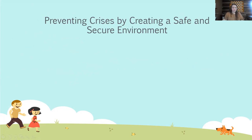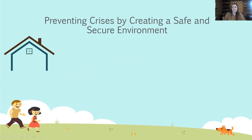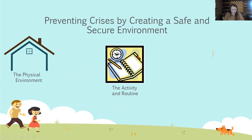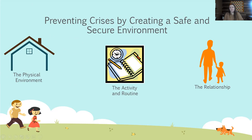Now we're going to talk about preventing crisis by creating a safe and secure environment. These are all factors known as setting conditions, which are anything that can make challenging behaviors more or less likely to occur. Included are the physical environment, the activity and routine, and the relationship. We're going to talk a little bit more about those now.